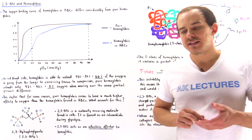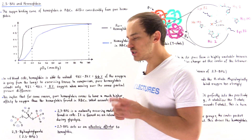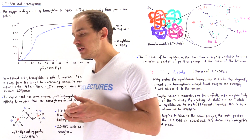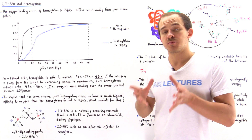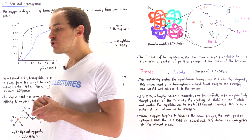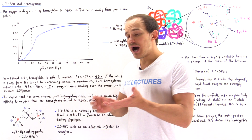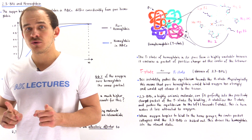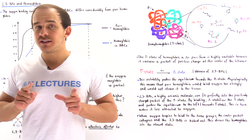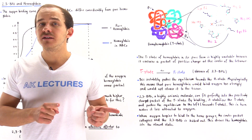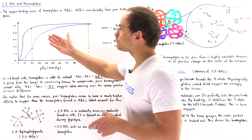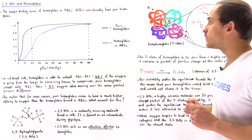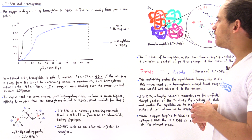When we discussed the oxygen binding curve for hemoglobin, we didn't mention a very important fact. The oxygen binding curve we spoke about previously was actually the curve for hemoglobin when it is present inside red blood cells. It turns out that if we isolate and purify hemoglobin and examine its oxygen binding curve, there will be a tremendous difference between the pure hemoglobin curve and the curve for hemoglobin found inside red blood cells, as we can see from the following graph.